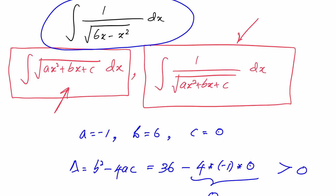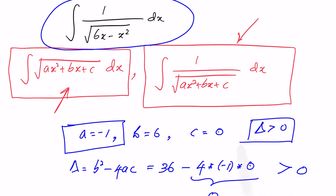When delta is positive there are two possible cases: one where a is also positive, and one where a is negative. For this example a = −1, so a is negative. For the combination where delta > 0 and a < 0, we use a standard substitution — specifically a sin θ substitution.